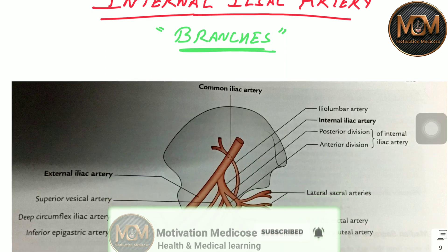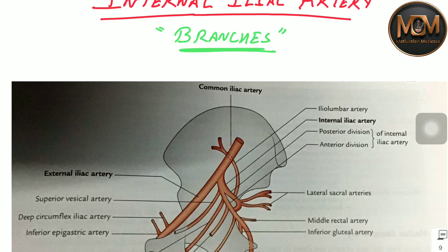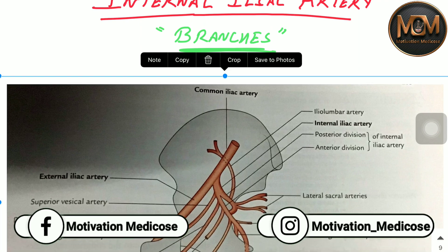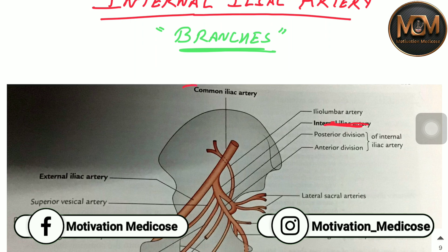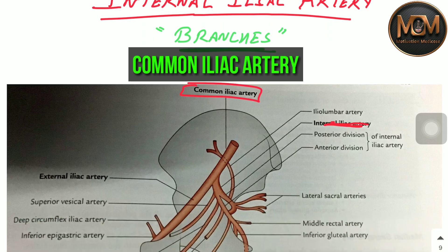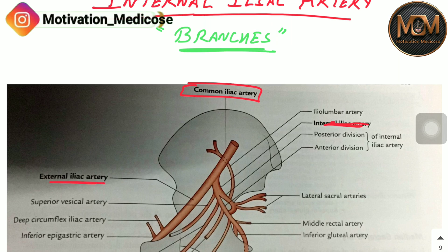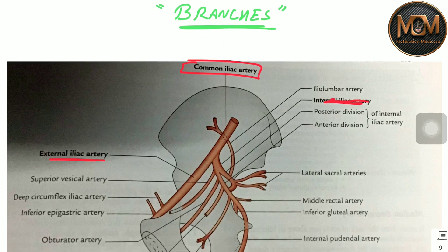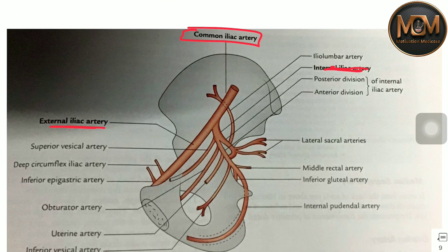The internal iliac artery is a branch of the common iliac artery. The common iliac artery also gives one more branch, that is the external iliac artery. So basically, the common iliac artery gives two branches: the external iliac and the internal iliac artery.